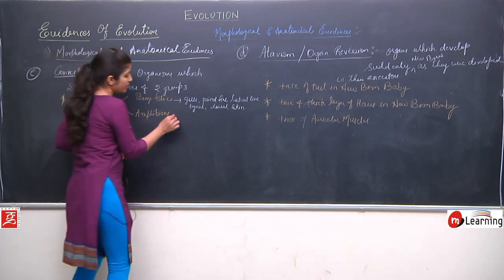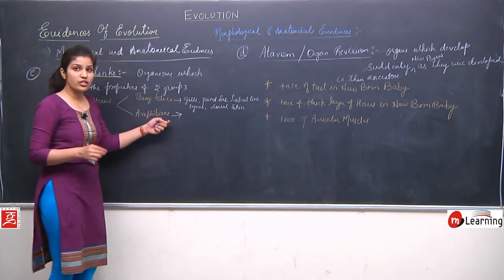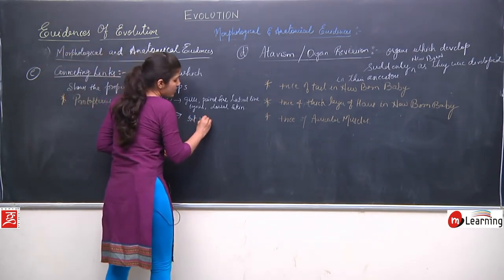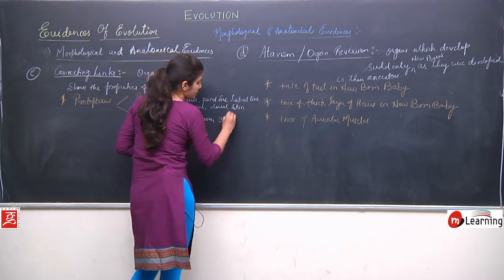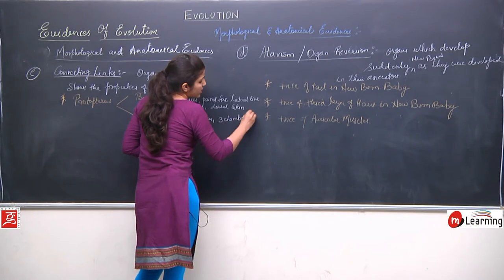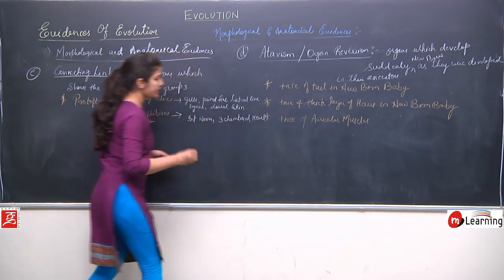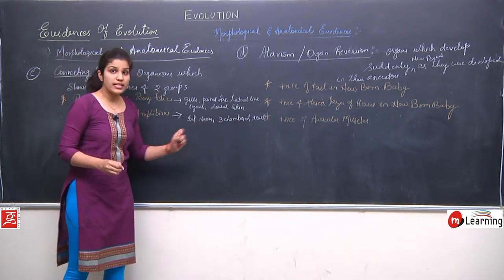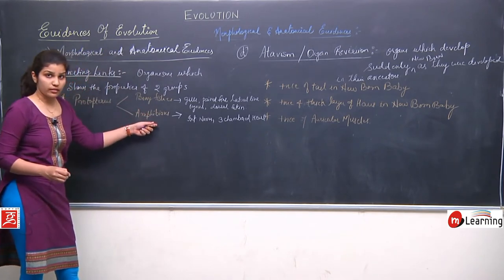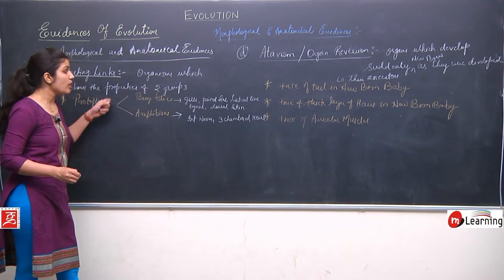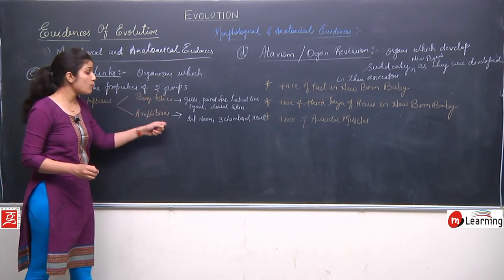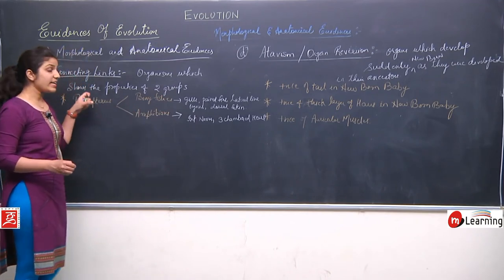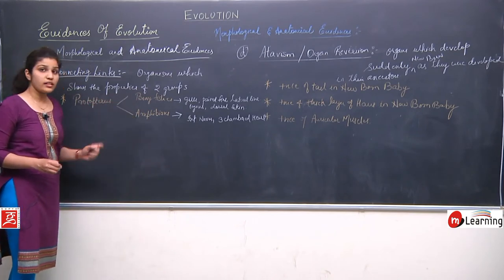Now the characters of amphibians present in Protopterus include internal lungs and a three-chambered heart. So some characters of bony fishes and some characters of amphibians are both present in Protopterus. Therefore, it is the connecting link between bony fishes and amphibians.